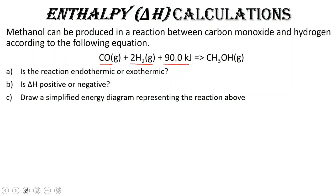And 90 kilojoules of energy is needed to produce one mole of methanol. Is this reaction endothermic or exothermic? I don't have delta H written on the side, but I do have an amount of energy written on my reactant side. If I have energy as a reactant, that means I'm putting energy into the system, so the reaction is endothermic.